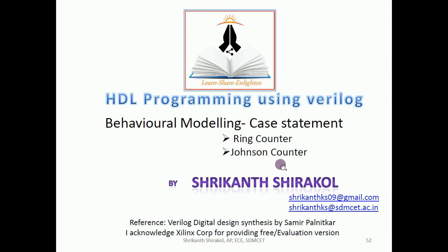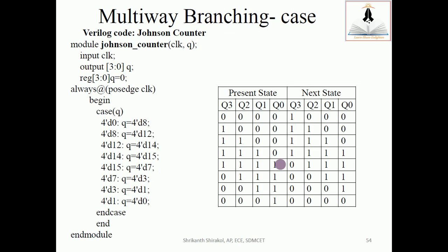One more counter is the Johnson counter. I am considering a 4-bit Johnson counter, which is much similar to a ring counter. In the Johnson counter truth table, present state and next state each have 4 bits of output. The initialization is done as 0000. When the positive edge is encountered, the most significant bit is made 1 and the rest remain as is, giving 1000. During subsequent positive edges we get 1100, 1110, 1111.